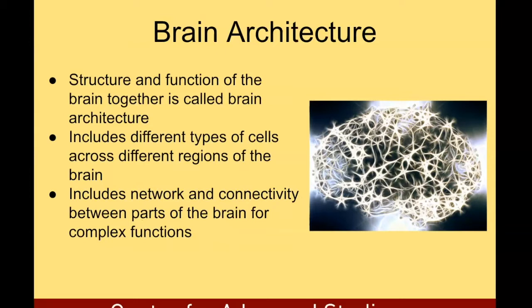What is brain architecture? Structure and function of the brain together is called brain architecture. Brain architecture includes different types of cells across the different regions of the brain. It also includes network and connectivity between parts of the brain for complex functions.